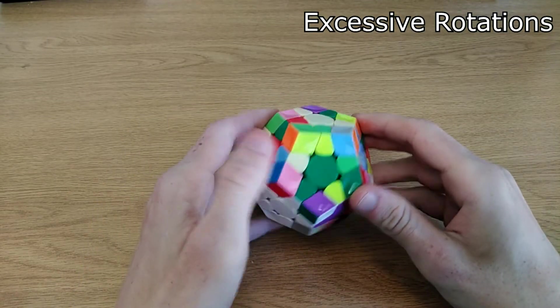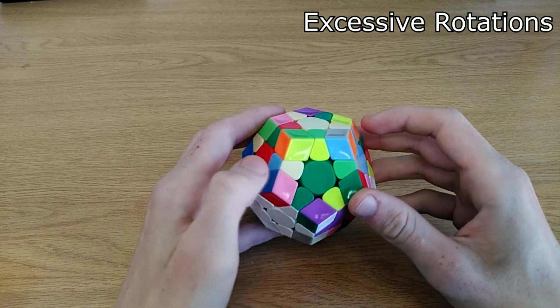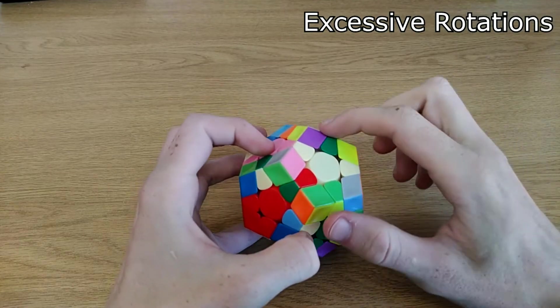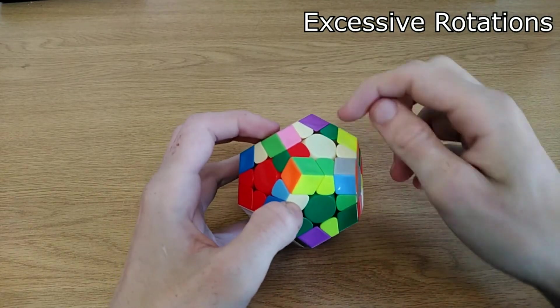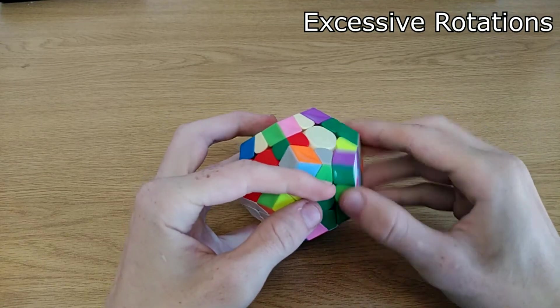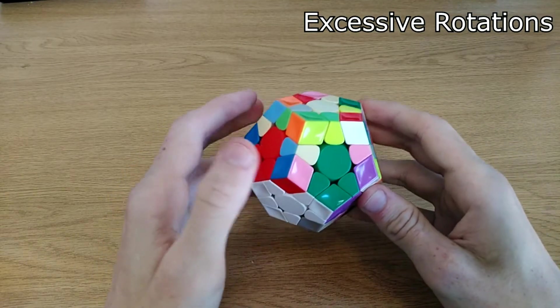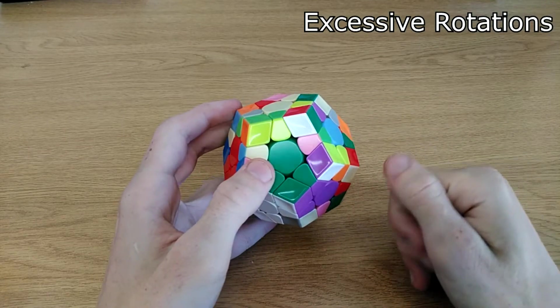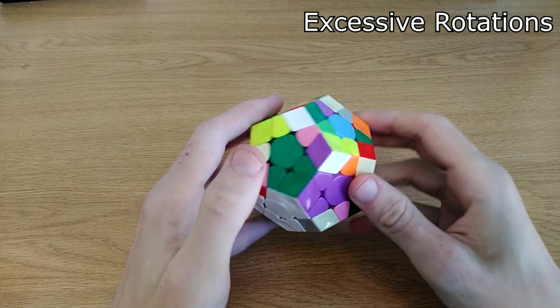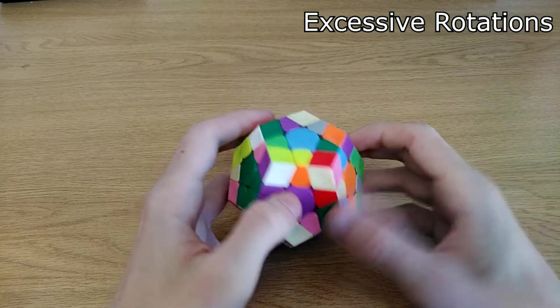You can also reduce your rotations by finding more efficient ways to solve pieces. So for instance, if I want to solve these two, I could just take them out, rotate and pair them, or I can use a much more efficient way of solving them, like this, without any rotations. And the only way you'll be able to do this is either by doing slow solves or watching more experienced Megaminx solvers walkthrough solves, to find more efficient ways to pair them.